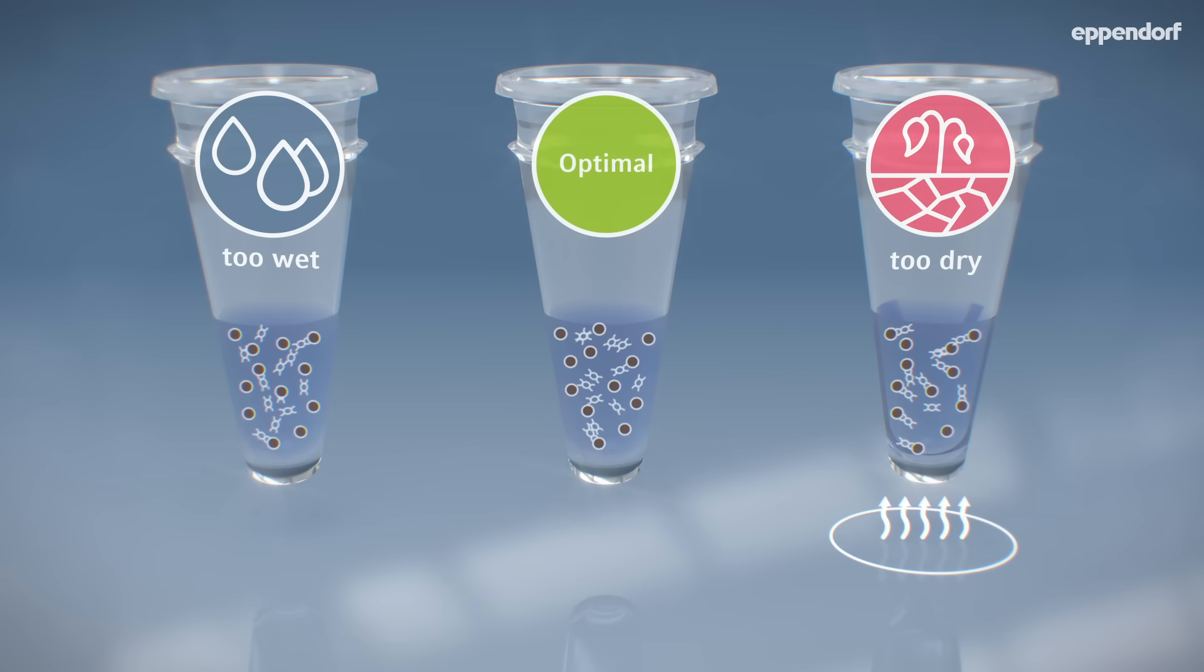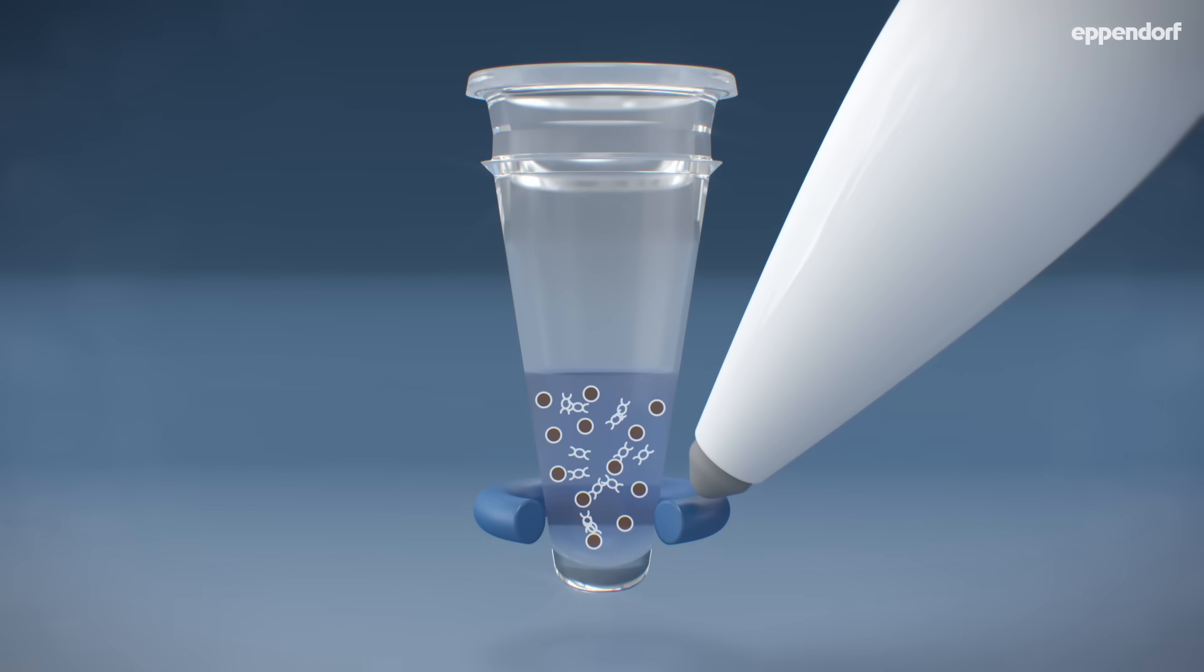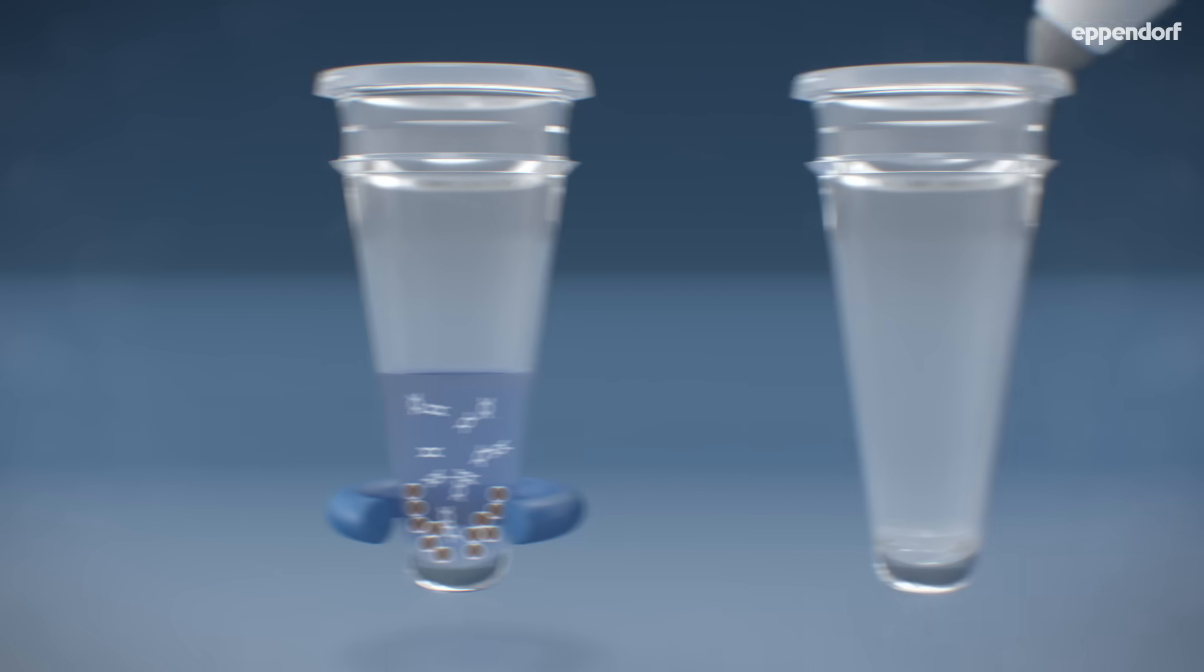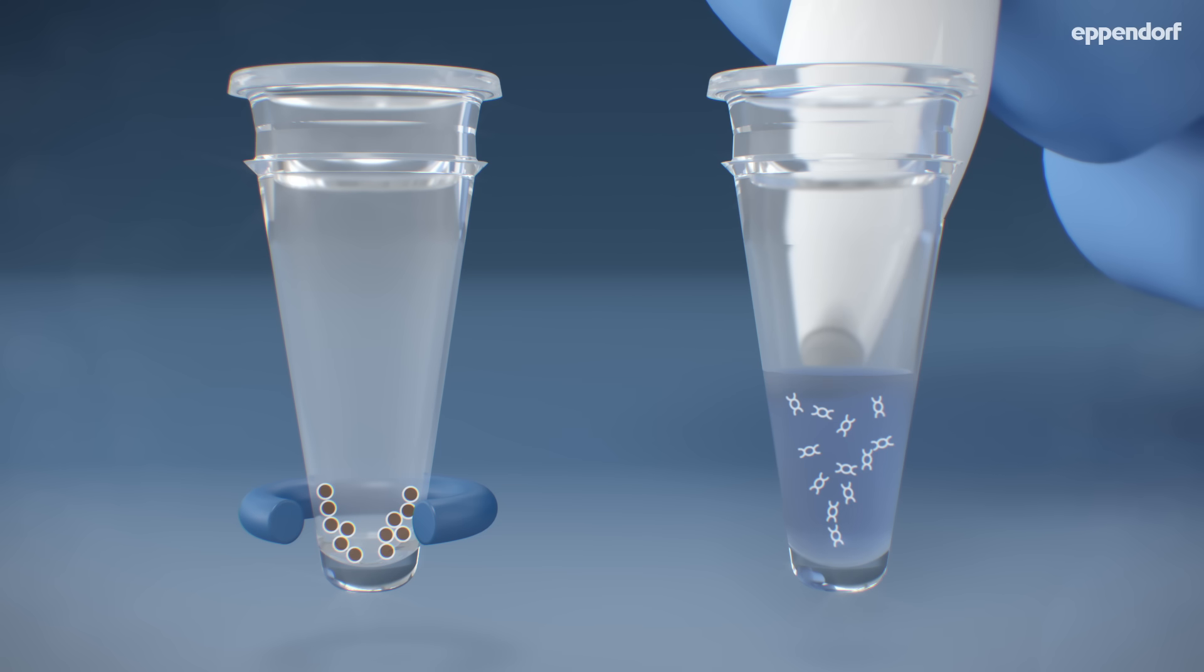In the final step, the DNA is eluted from the beads. The magnetic beads are then pelleted again. The purified DNA sample is transferred to a new well and is ready for the next steps.